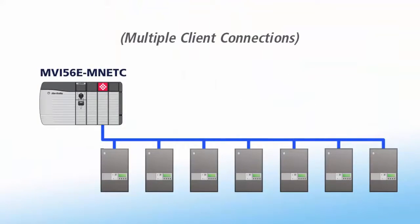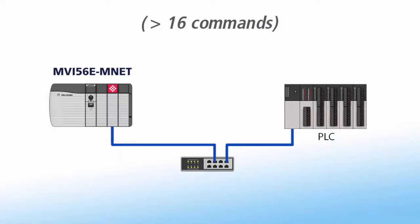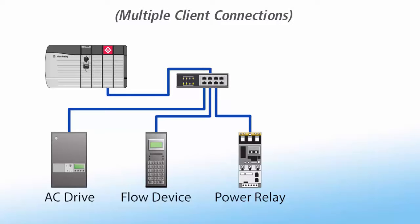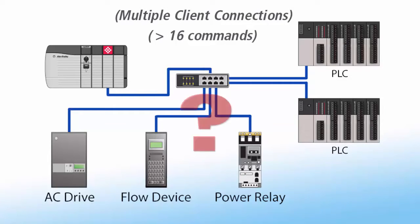In conclusion, if you have multiple Modbus TCP/IP server devices that you need to communicate with, go with the MVI56E MNET-C. If you need significantly more than 16 commands for your client connection, consider the MVI56E MNET. If you intend to use the module in a remote rack via ControlNet, use the MNET-R or MNET-CR. If your application is more complicated, like you need multiple connections and more than 16 commands per connection, contact our technical support for help figuring out your best option. Thanks for watching.